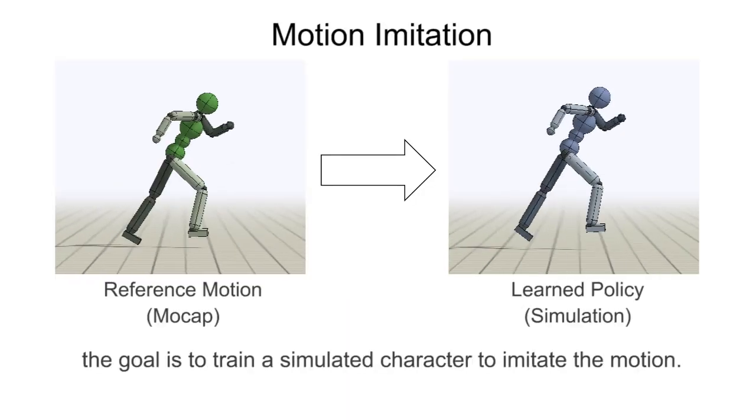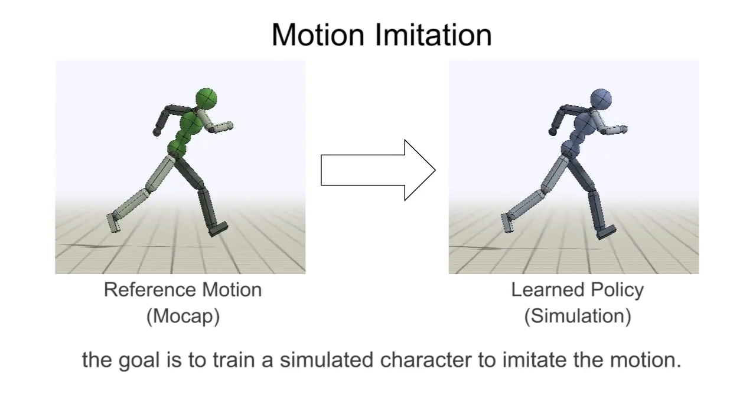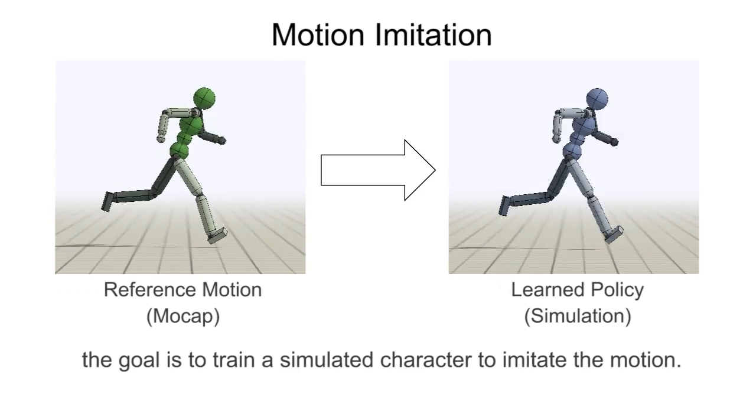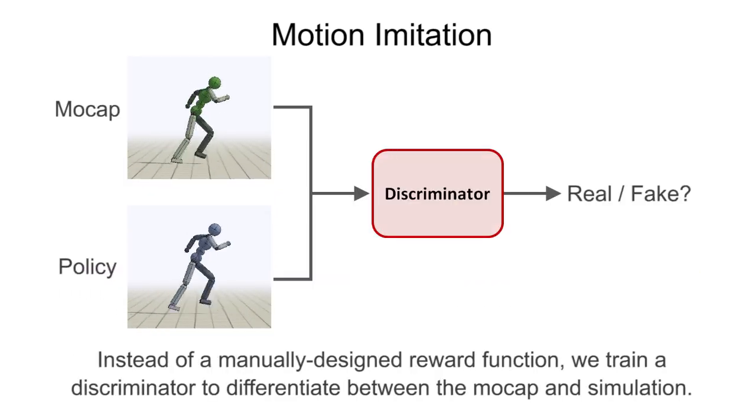Given a reference motion, the goal is to train a simulated character to imitate the motion. Instead of a manually designed reward function, we train a discriminator to differentiate between the mocap and simulation.